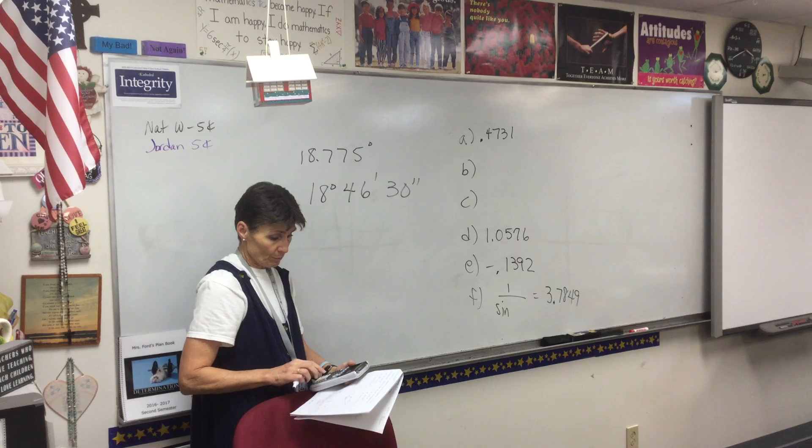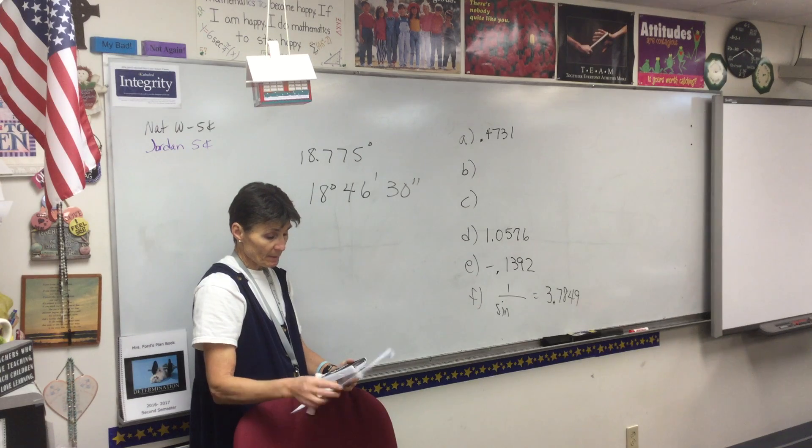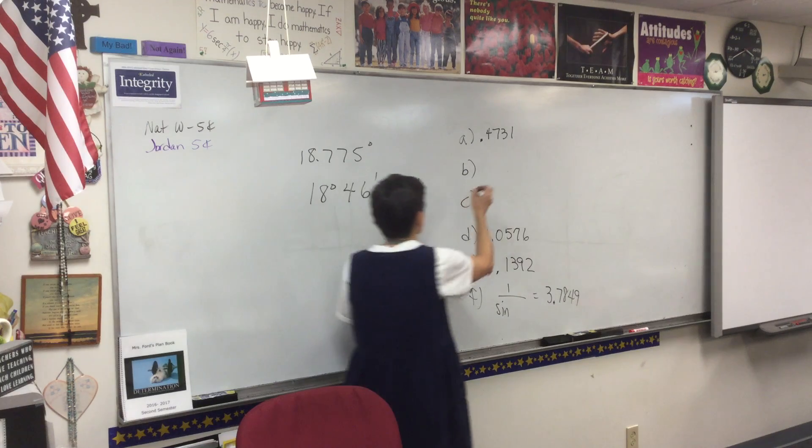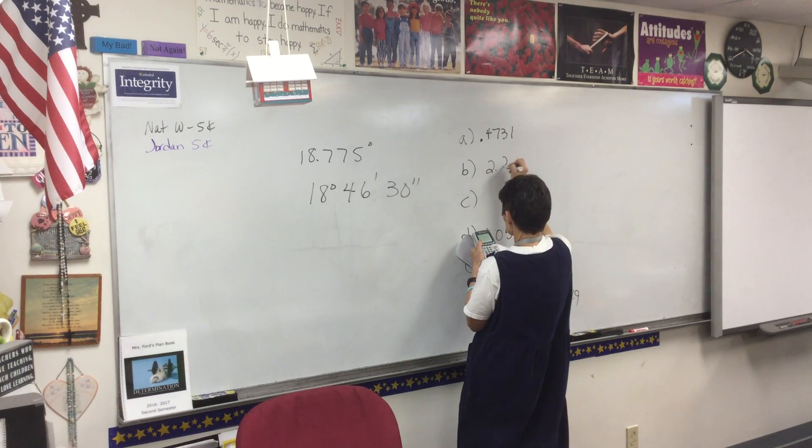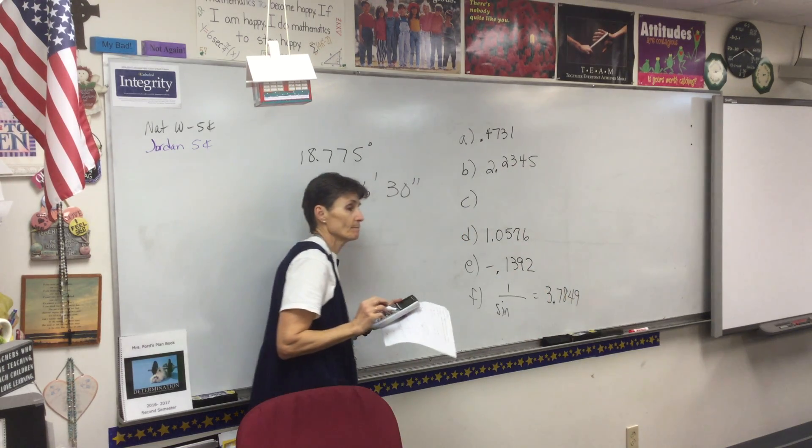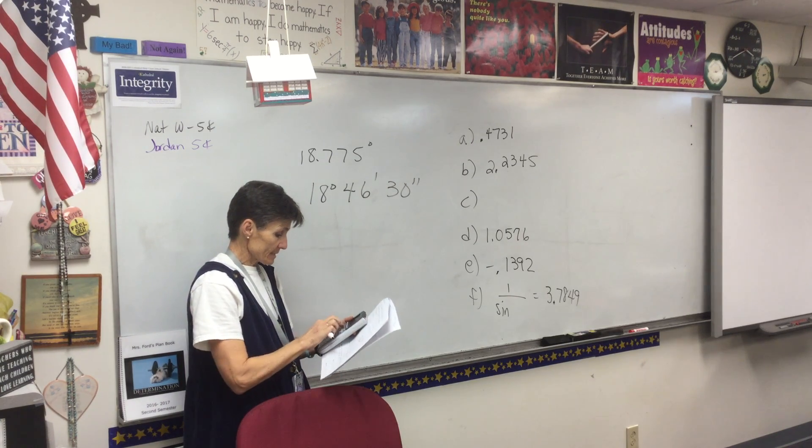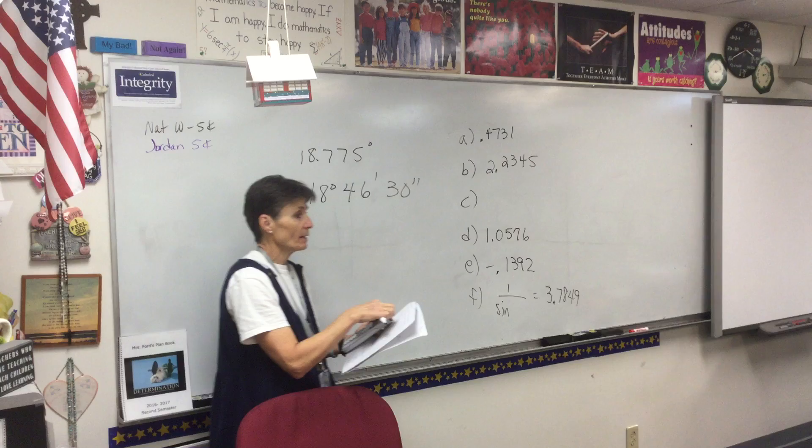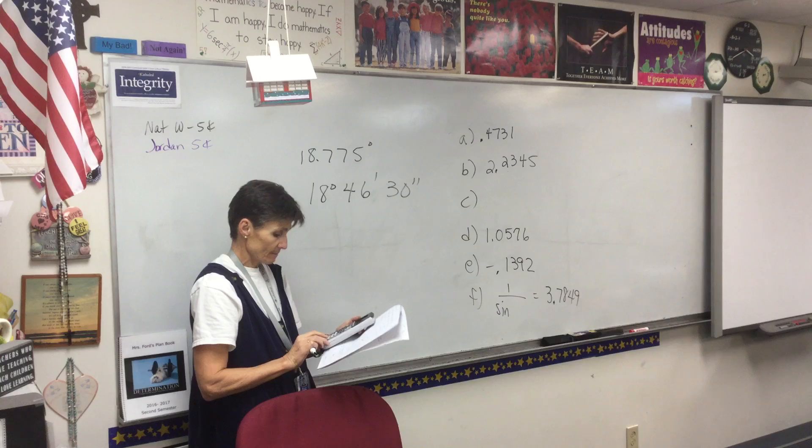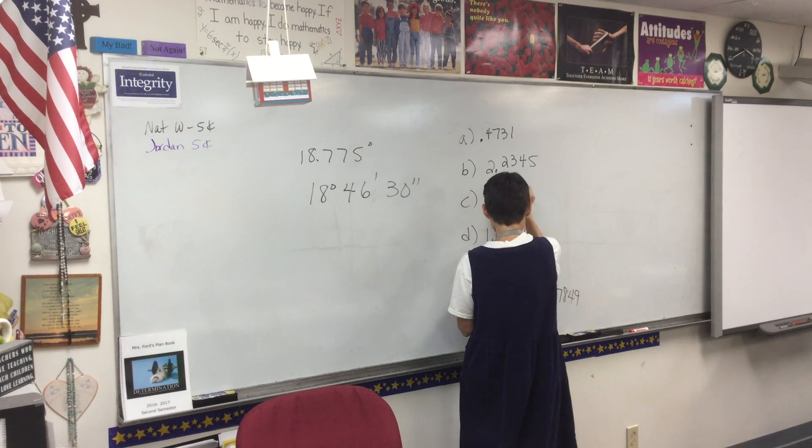Change it to radian mode and then type in tan 1.15. So 2.2345. And then second cosine, that's the button that's written there. Second cosine .376. 1.1853.